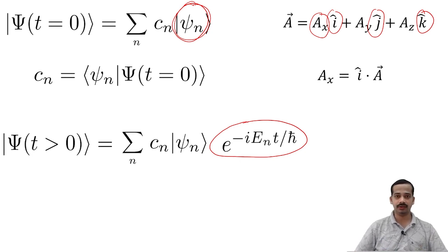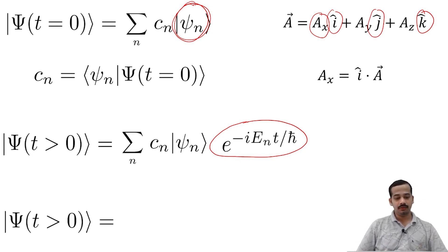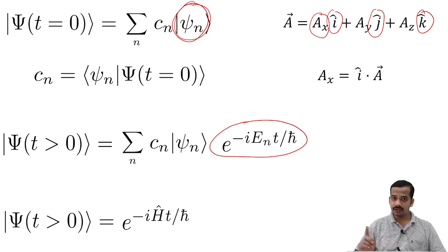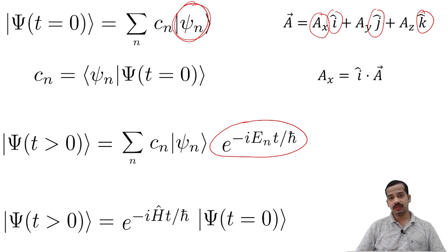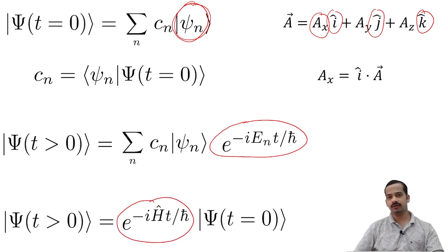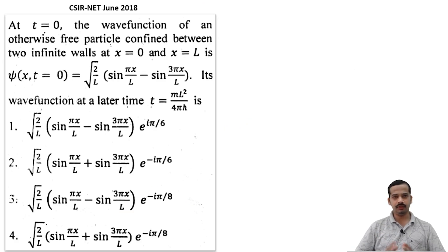That is the time-evolved state. The state at t greater than 0 can also be obtained by operating the time-evolution operator on the state at t equal to 0, but in many cases this operator is quite difficult to find. Now let us apply this concept.